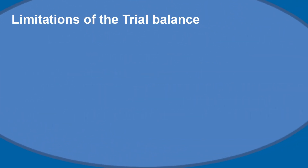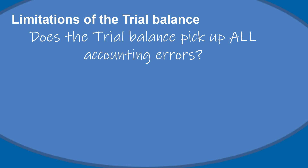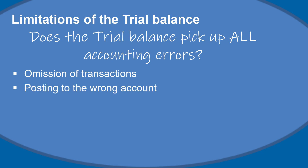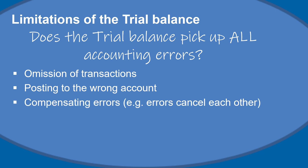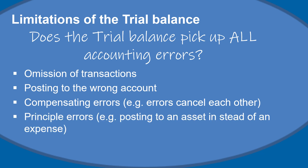The limitations of the trial balance: the trial balance does not pick up all accounting errors. It will not pick up if you have left out a transaction in totality. It will also not pick up if you have posted it to the wrong account — for example, if you paid for repairs but by mistake posted it to stationery. It will also not pick up compensating errors, where two errors cancel each other out. Lastly, principal errors are also not detected — for example, posting to an asset account when you should have used an expense account.